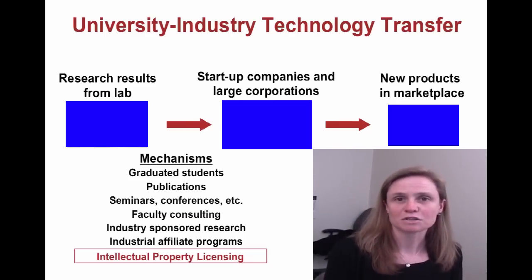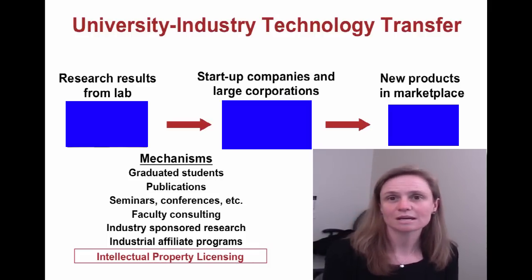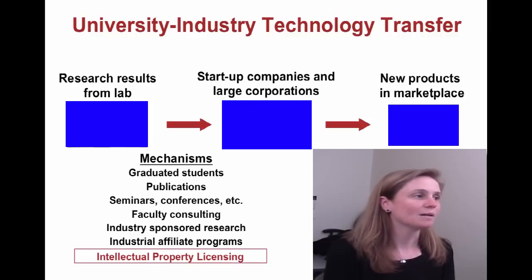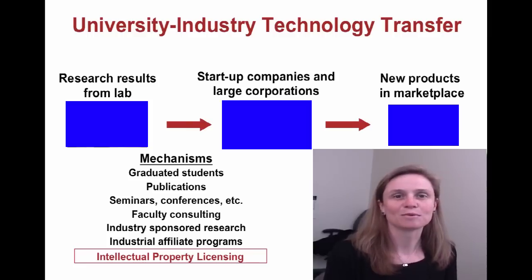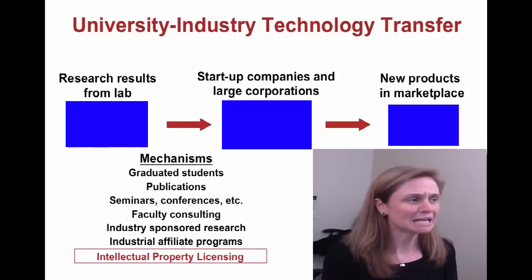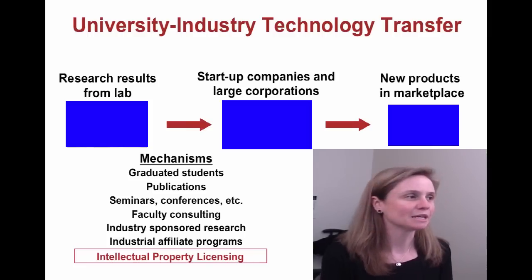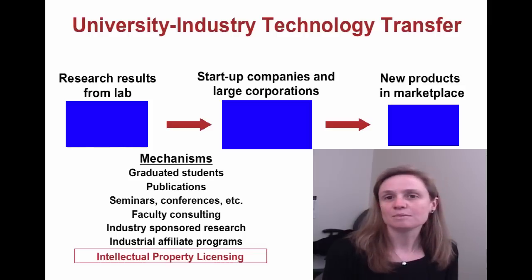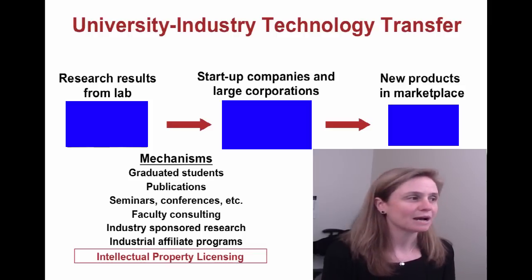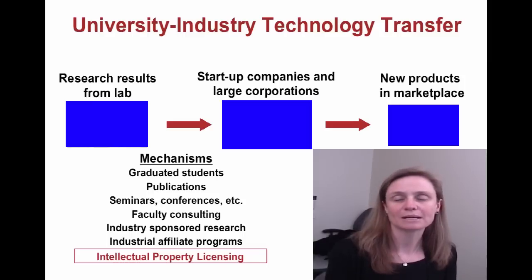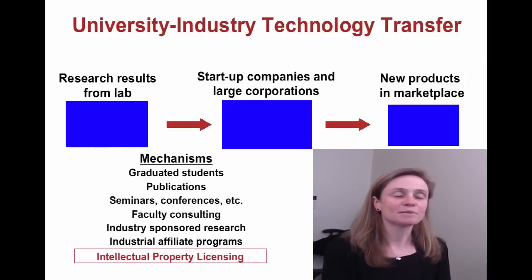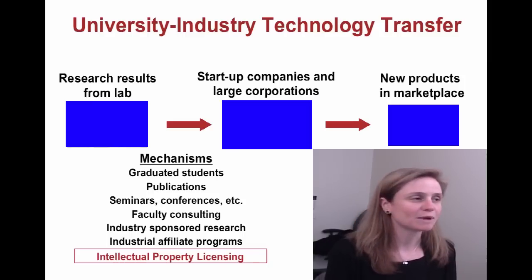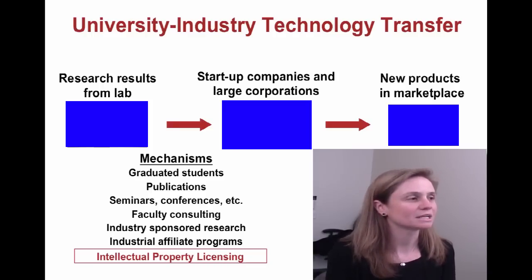There are many different ways that technology transfer happens from universities to industry. One is through the students that come through the university — someday you may be working in industry, and the things you learn at the university are something you may take with you. Publications produced by students, faculty, and research associates are also a mechanism of technology transfer. Seminars or conferences about your work at the university are also ways that technology transfer can happen.